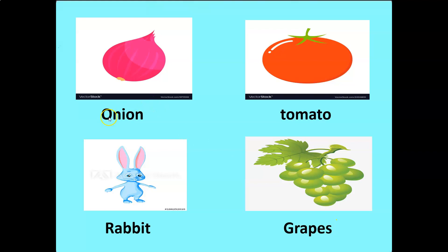Onion, manzhe Kanda O-N-I-O-N Onion. Tomato T-O-M-A-T-O Tomato, manzhe Tomato. Rabbit R-A-B-B-I-T Rabbit, manzhe Sasa. Grapes G-R-A-P-E-S Grapes, manzhe Draksh.